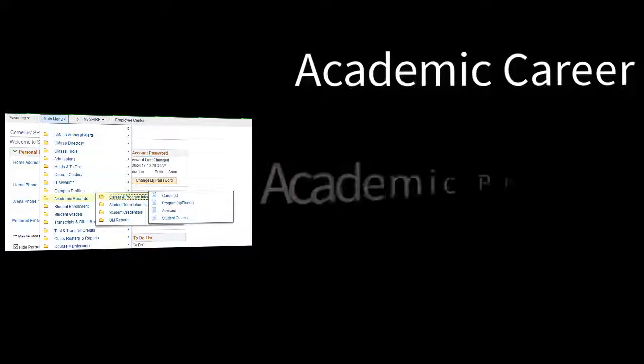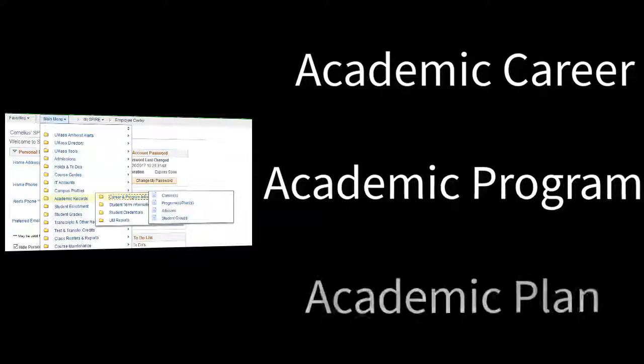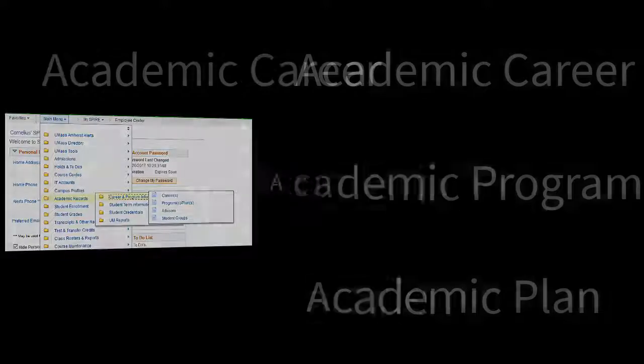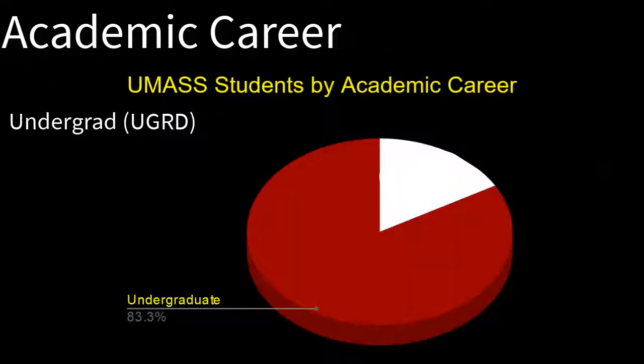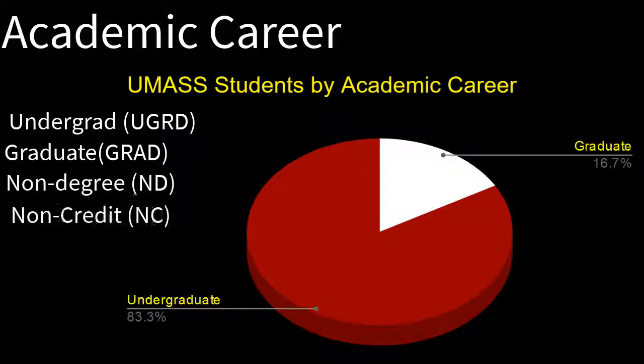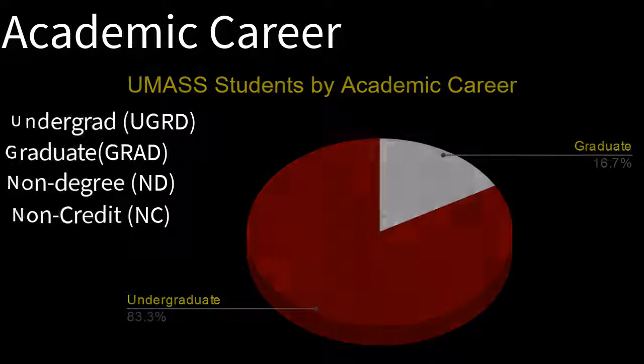The Academic Records pages use terminology that is important to be clear about. Some of the keywords are Academic Career, Program, and Plan. Most students at UMass Amherst have undergraduate careers. A lesser number have graduate careers. Some careers are non-degree and some are non-credit.